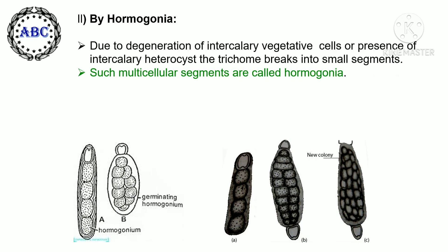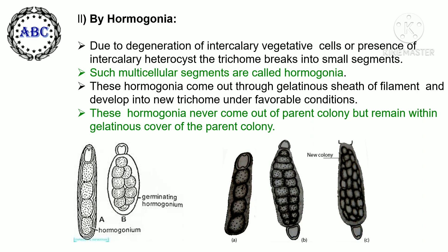Second, by hormogonia: due to degeneration of intercalary vegetative cells or presence of intercalary heterocysts, the trichome breaks into small segments. Such multicellular segments are called hormogonia. These hormogonia come out through the gelatinous sheath of the filament and develop into new trichomes under favorable conditions. However, these hormogonia never come out of the parent colony but remain within the gelatinous cover of the parent colony.